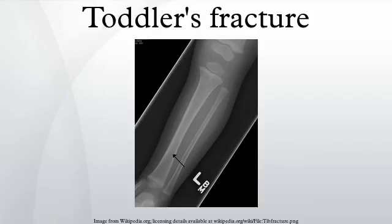Treatment consists of a long-leg orthopedic cast for several weeks. The condition was initially recognized by Dunbar and co-workers in 1964. A new terminology has been proposed, which defines toddler's fracture as a subset of childhood accidental spiral tibial fractures.